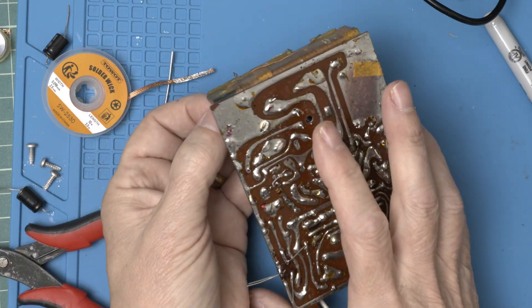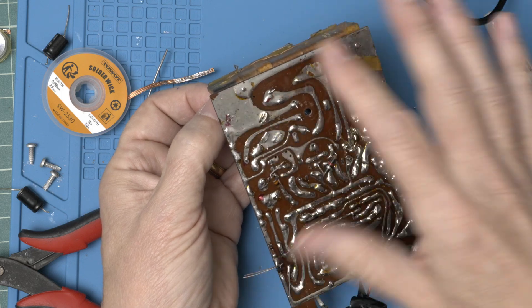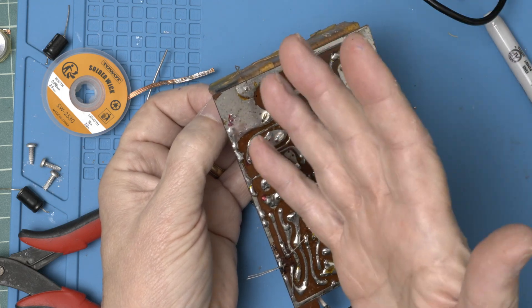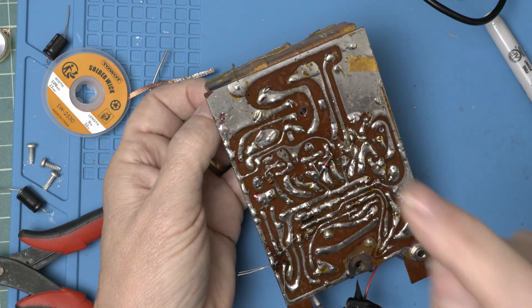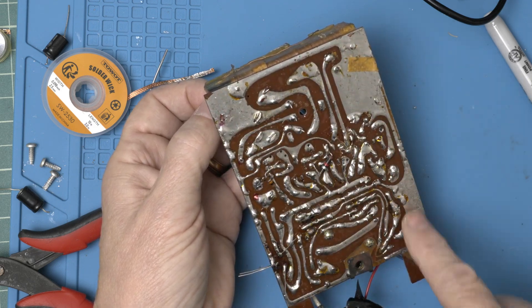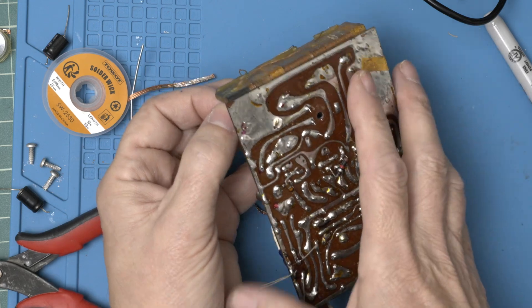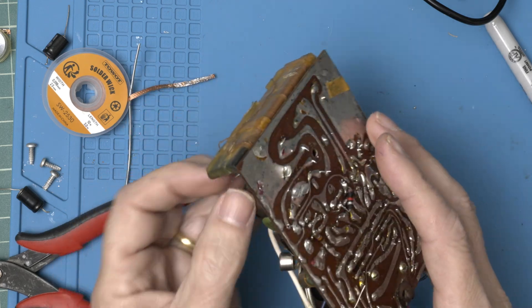Here's a hint, by the way. When you see something like this, this is clearly the ground plane. And if you're going to replace an electrolytic cap, the negative terminal is very likely to be something like this. And sure enough, it is in this case too.